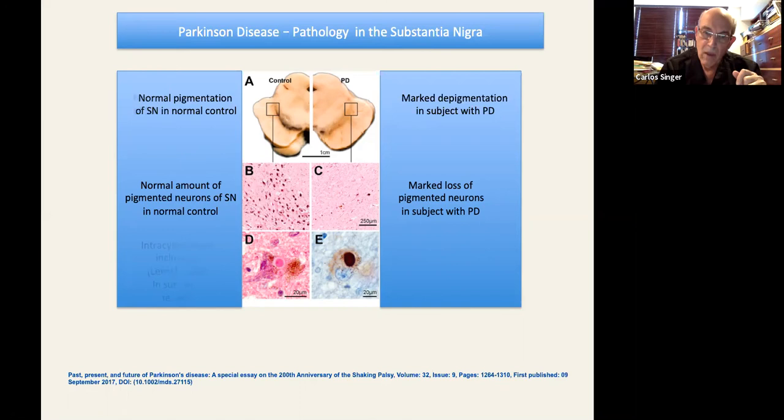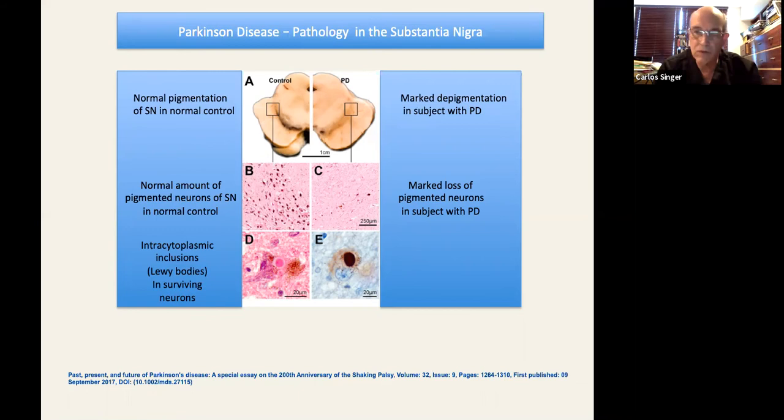When you look into the substantia nigra with higher magnification, you find these bodies called Lewy bodies, inclusion bodies in the surviving neurons. What is this? If you do special staining, you discover that a greater part of that Lewy body contains aggregation of alpha-synuclein. That's a protein that will be a repeated theme in this lecture.